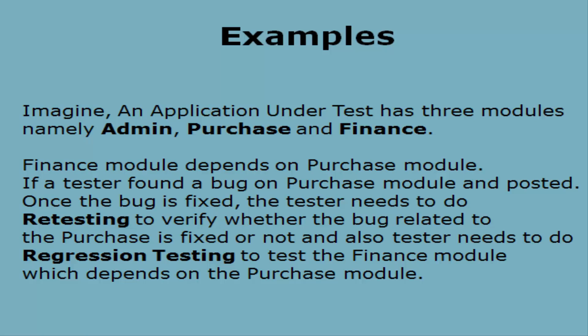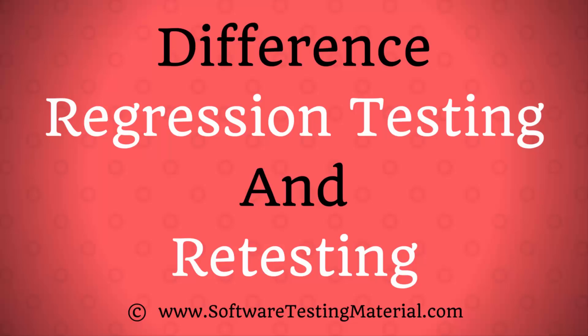Some other differences between regression and retesting: Retesting is done on failed test cases, whereas regression testing is done on past test cases. Retesting makes sure that the original defect has been corrected, whereas regression testing makes sure that there are no unexpected side effects.